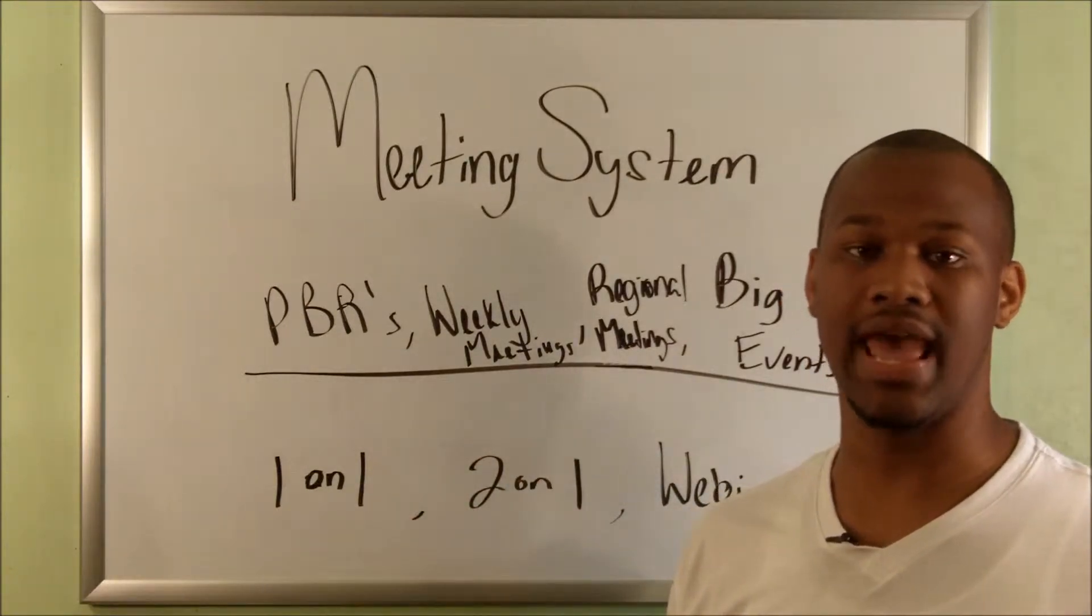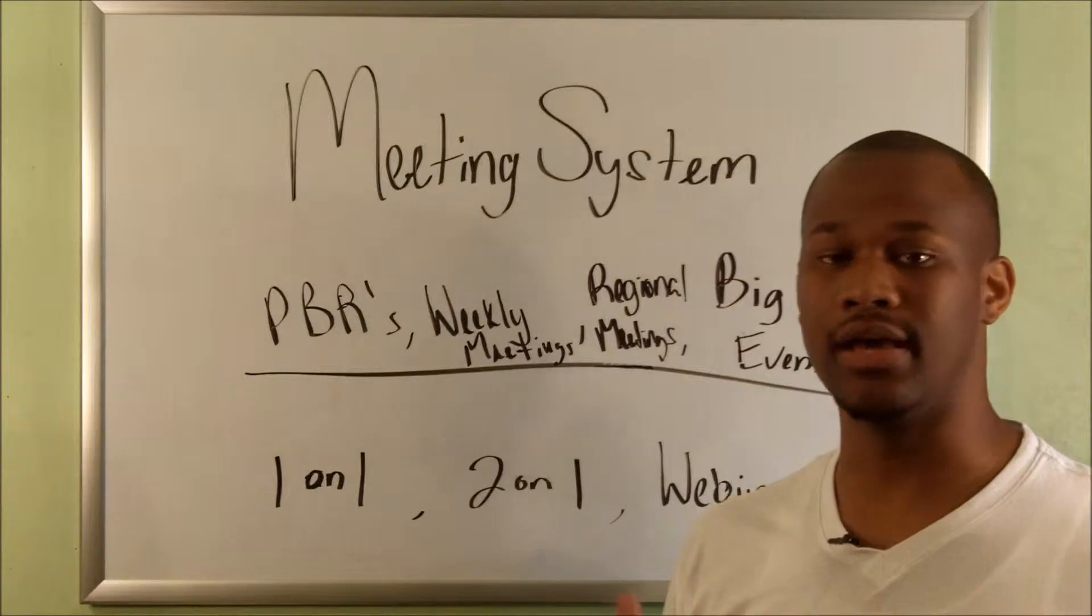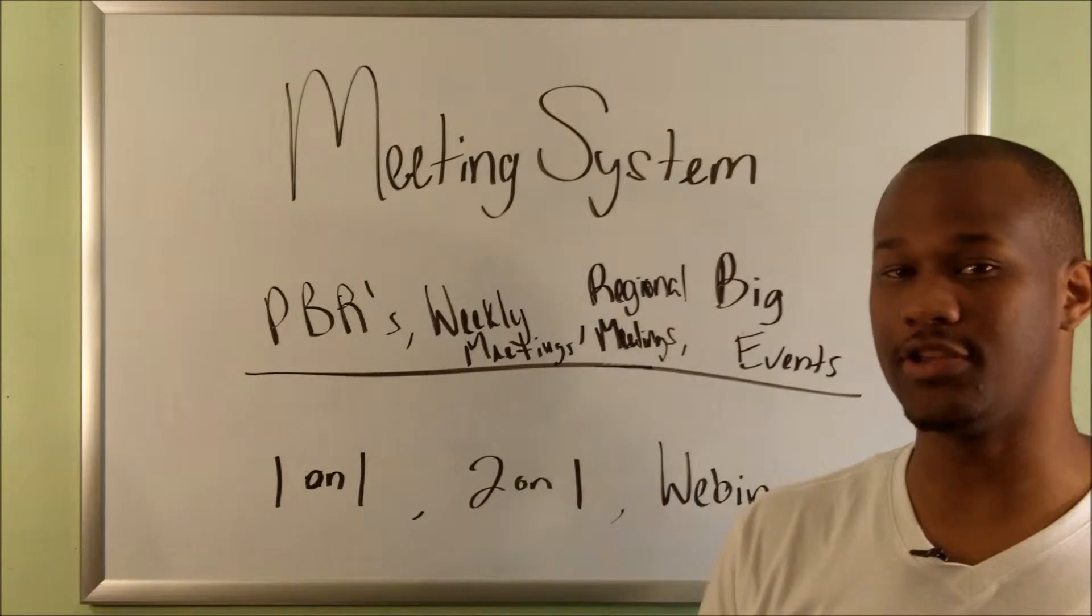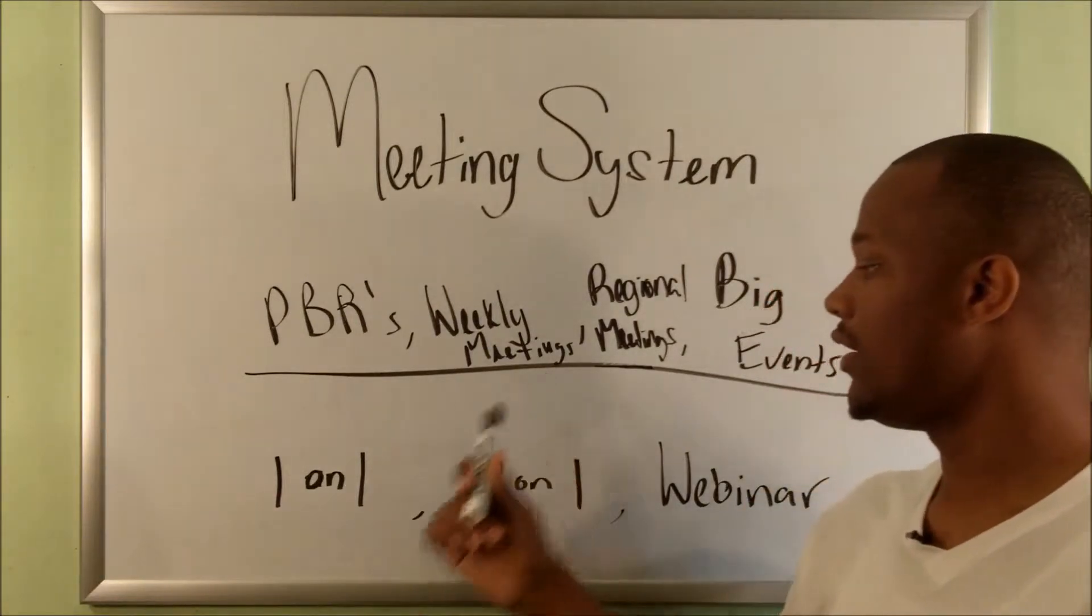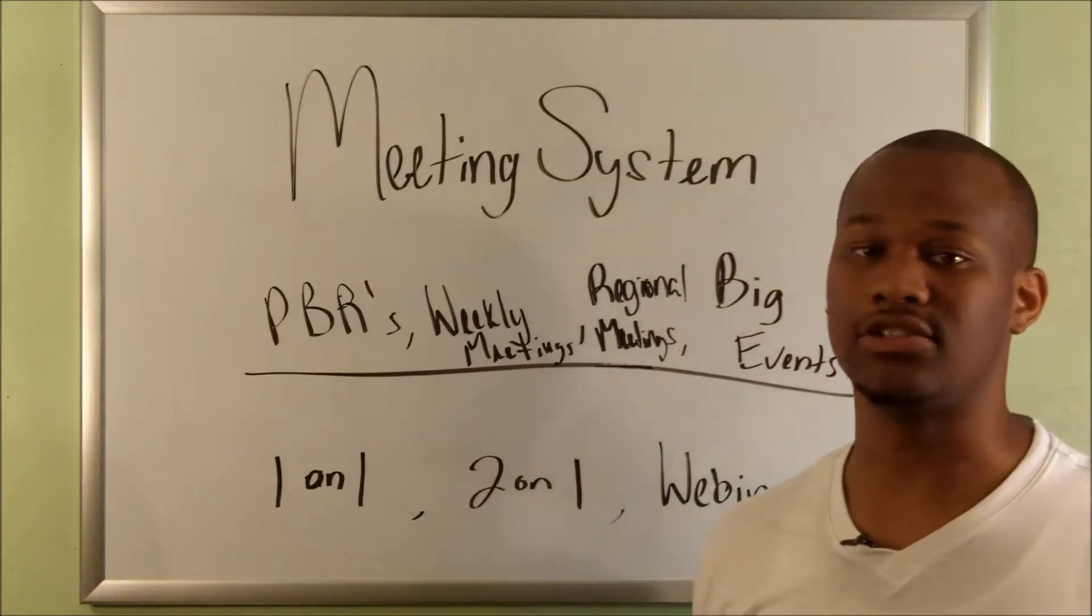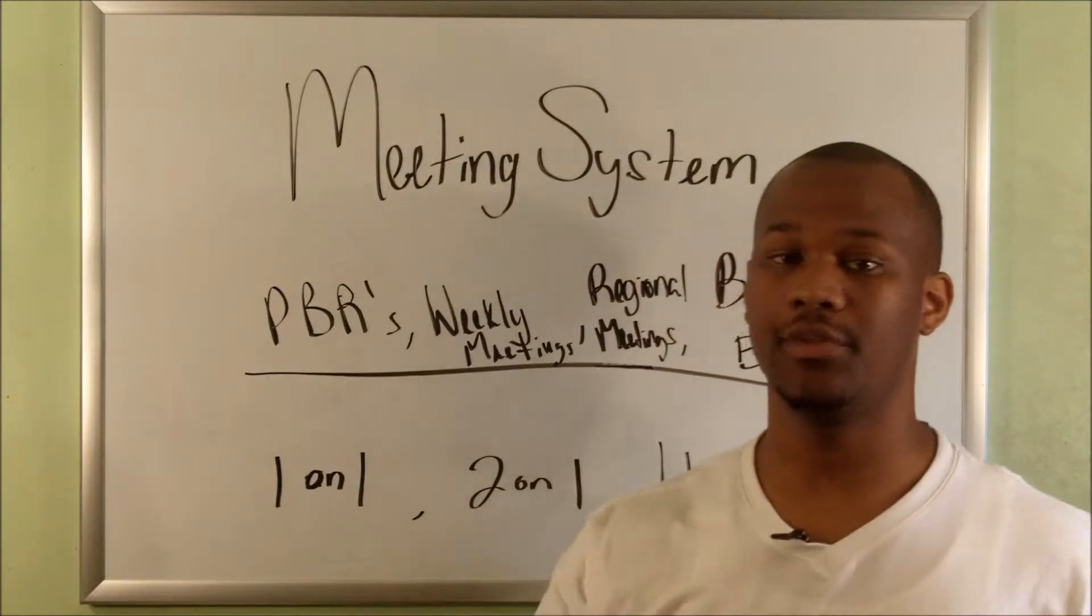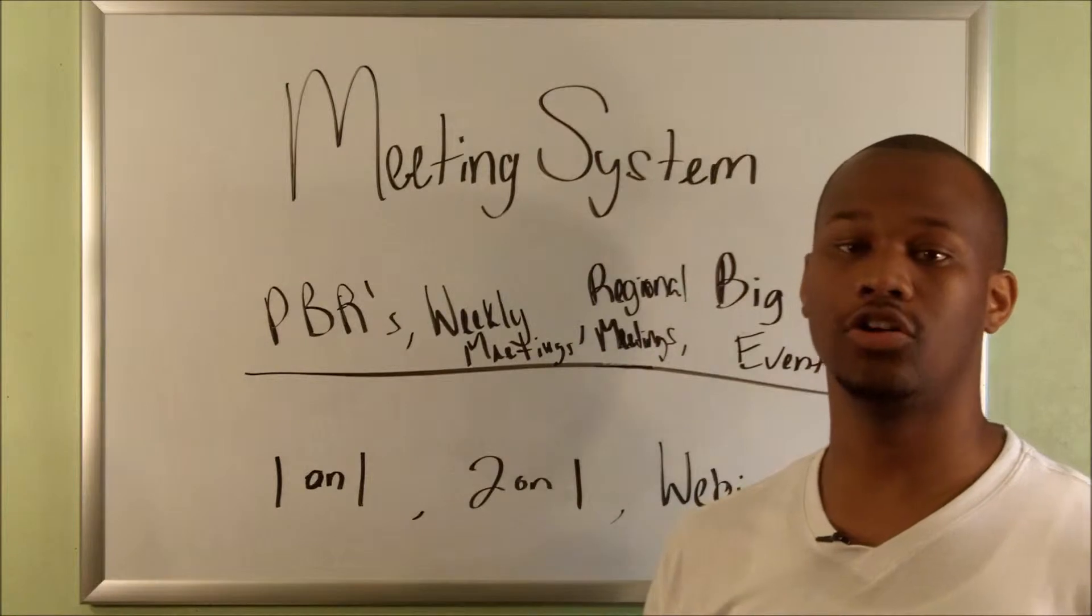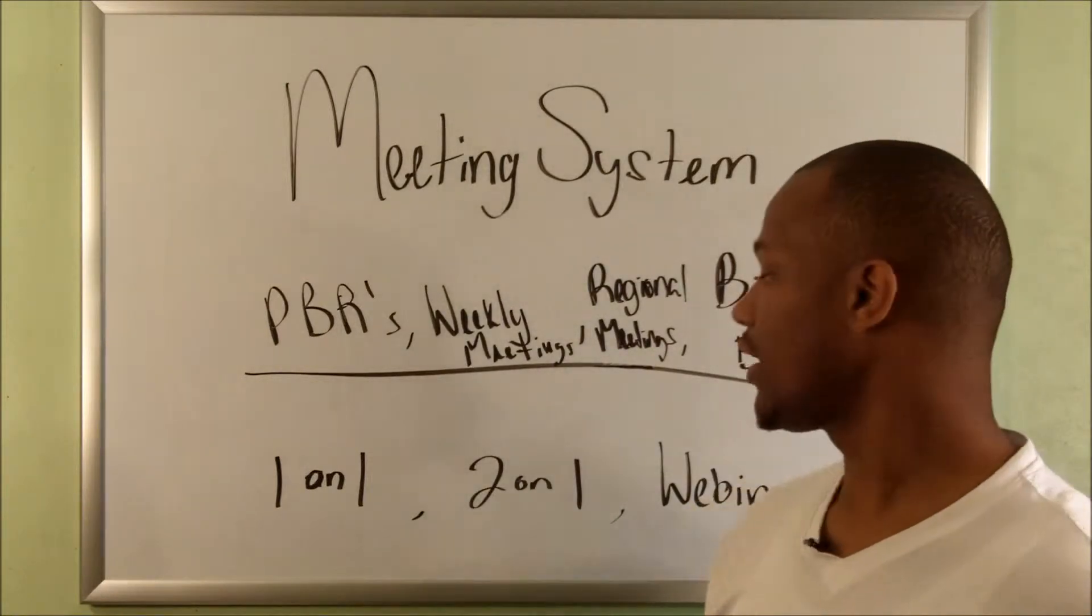The meeting system has about seven or so meetings inside of it. They need to be happening on a daily to six-month to yearly basis. Number one, you need to have one-on-one meetings between yourself and potential prospects—your friends, families, coworkers, your network, and new people that you meet.